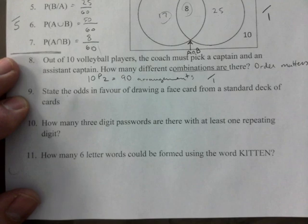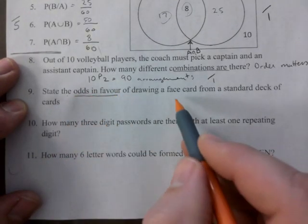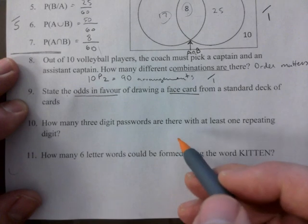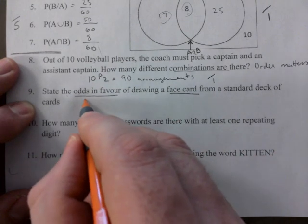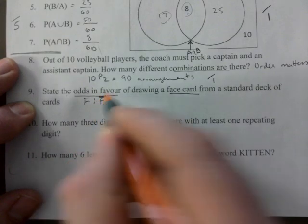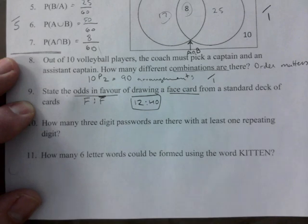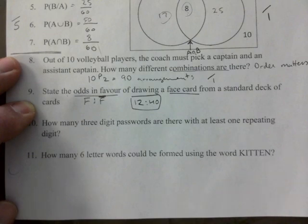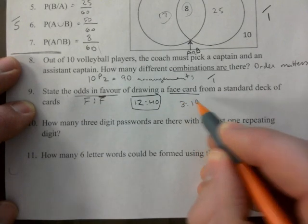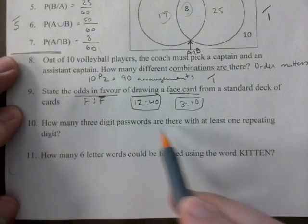State the odds in favor of drawing a face card from a standard deck of cards. So because of that, it's face compared to no face. So 12 to 40, if you have that, bingo, we're in business. 4 goes into 12 three times, goes into 40 ten times. So if you wanted, both are acceptable. Both are acceptable.